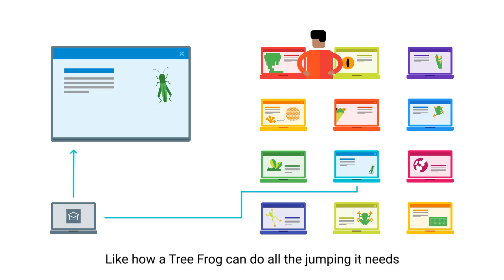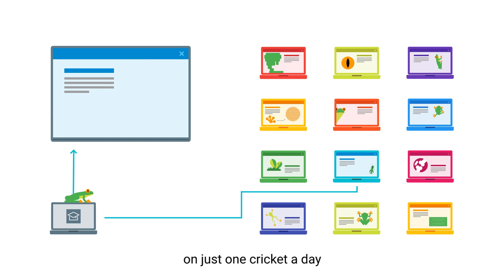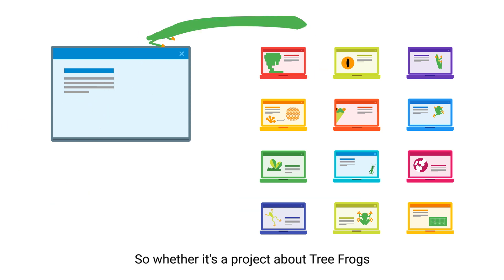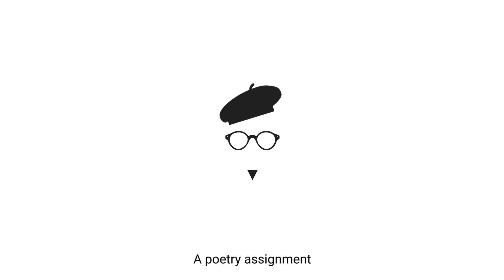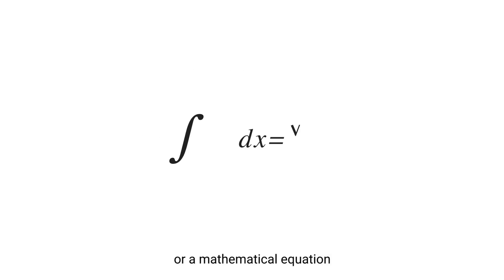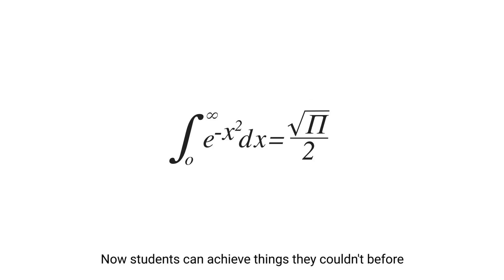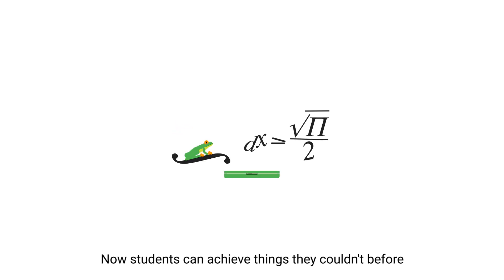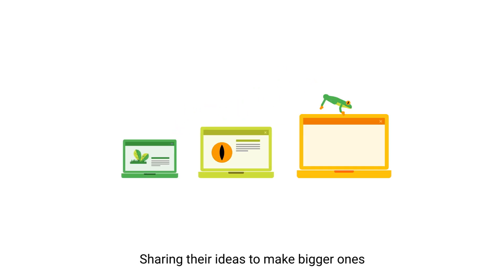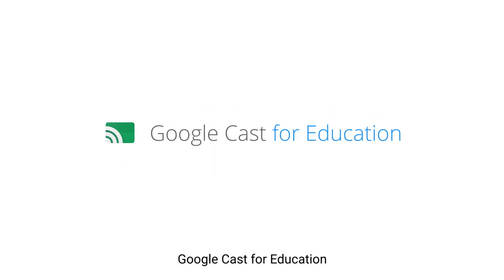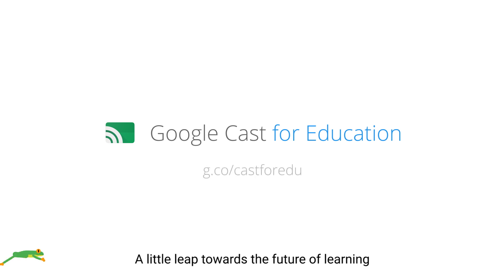Like how a tree frog can do all the jumping it needs on just one cricket a day. So whether it's a project about tree frogs, a poetry assignment, or a mathematical equation, now students can achieve things they couldn't before, sharing their ideas to make bigger ones. Google Cast for Education — a little leap towards the future of learning.